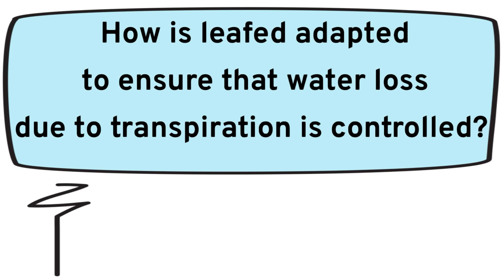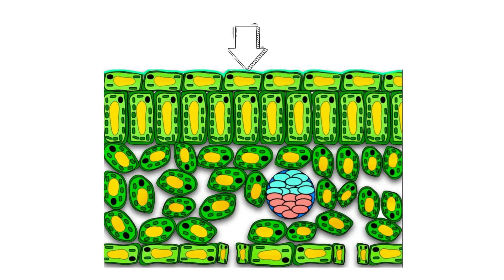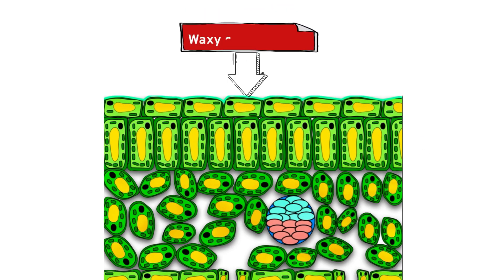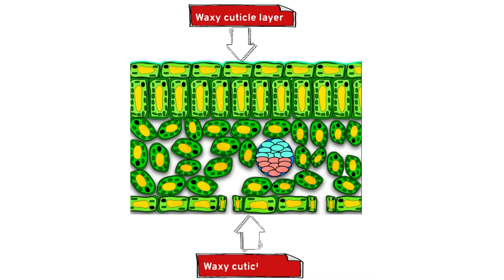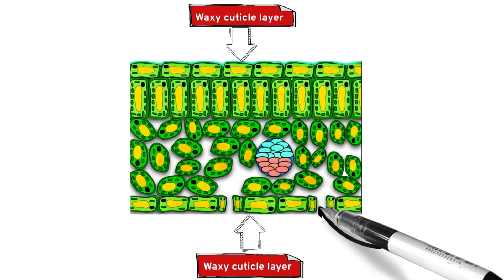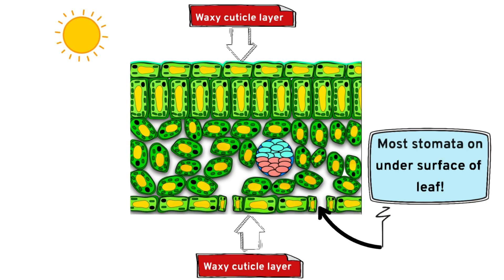The structure of the leaf is a very important diagram and you're often asked how the leaf is adapted to ensure that water loss due to transpiration is controlled. First of all there is a waxy cuticle layer — a transparent layer on the top of the leaf which is quite thick. There is also a waxy cuticle layer on the undersurface but it's not as thick. Most of the stomata are greatest in number on the undersurface of the leaf, which does not receive direct sunlight.